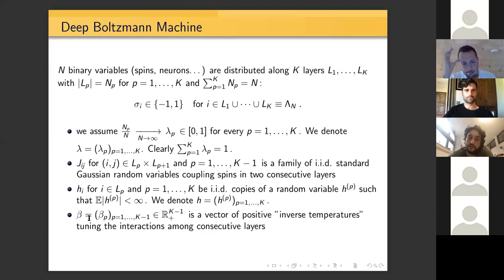J_{ij} is the coupling between spin i and j, and we assume this is a standard Gaussian random variable. We can also imagine having some external field acting on the layer p. We have no special requirement on the distribution of the random field, only finite absolute moments. We can also fix some parameter β, which is a vector of positive inverse temperatures tuning the interactions among consecutive layers.